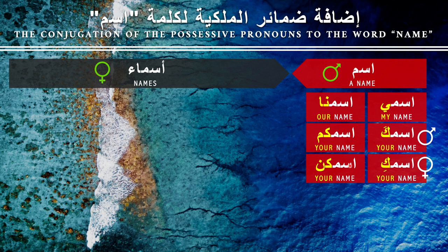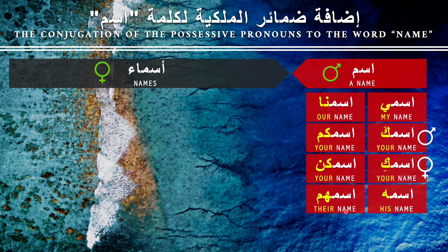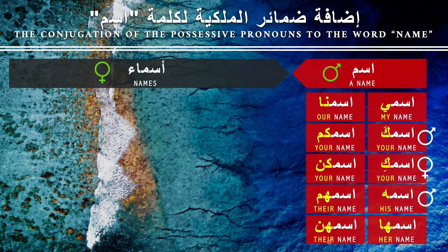Just keep this information in your notebook. So 'his name' is 'ismuhu' — just the suffix 'hu' at the end. 'Their name' for masculine: 'ismuhum.' For the feminine: 'her name' is 'ismuha.' 'Their name' if they're feminine: 'ismuhunna' or 'ismuhun.' The exact same possessive pronoun suffixes are always used in all cases for any noun in Arabic.